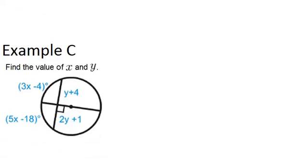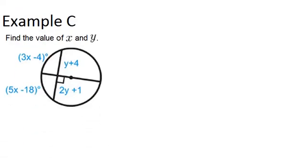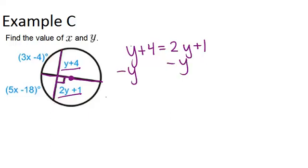Let's look at Example C. Find the value of X and Y. This looks to be a very similar situation. We have a diameter, which we can tell because of the center. We have a chord, and they meet at a right angle. So that means Y plus 4 and 2Y plus 1 must be congruent or equal to each other, because the diameter must bisect that chord. So we can solve this equation: 4 equals Y plus 1, which means that 3 equals Y, or Y equals 3.